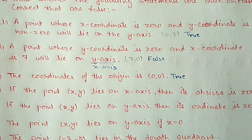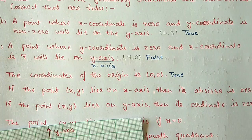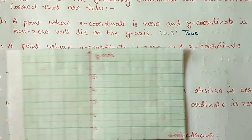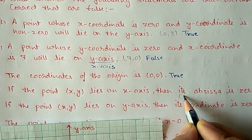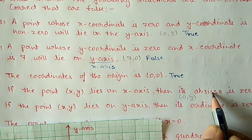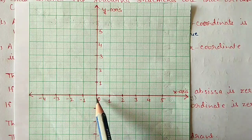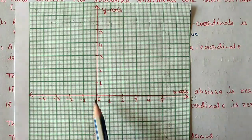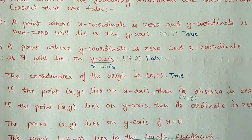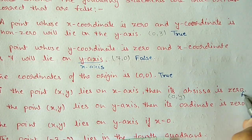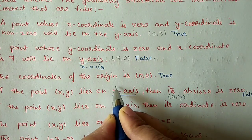Part d: if a point (x, y) lies on the x-axis, then the abscissa is 0. Abscissa means the x-coordinate. If x is 0, the point is (0, y), which lies on the y-axis — not the x-axis as stated. So this statement is false. The correct statement is: if the abscissa is 0, the point lies on the y-axis.